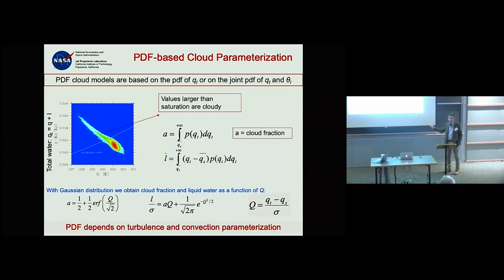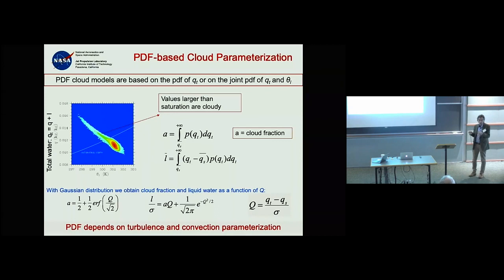This variance of the Gaussian distribution — or higher moments in more complex cases — depends on how much turbulence and convection there is. If there's no turbulence the variance is very small; with a lot of turbulence it's very wide.